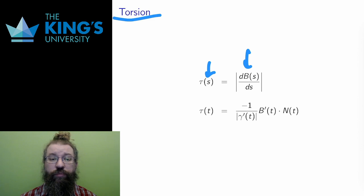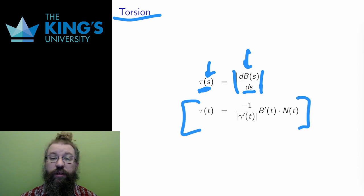The torsion, written tau of s, is the length of the derivative of the binormal. Like curvature, the binormal can be calculated in an arbitrary parametrization by this formula. Tau of t is negative 1 divided by the length of the tangent times the dot product of the derivative of the binormal and the normal. A bit strange, and I won't do a proof that it works, but this does calculate torsion.